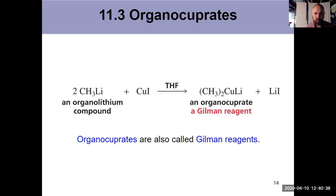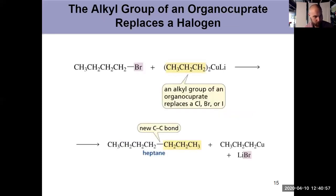We form this organocuprate - less polar bond, less reactive than the original organolithium or an organomagnesium - but organocuprates are super useful because we can use them to do what's known as a coupling reaction, taking two alkyl groups and joining them together.